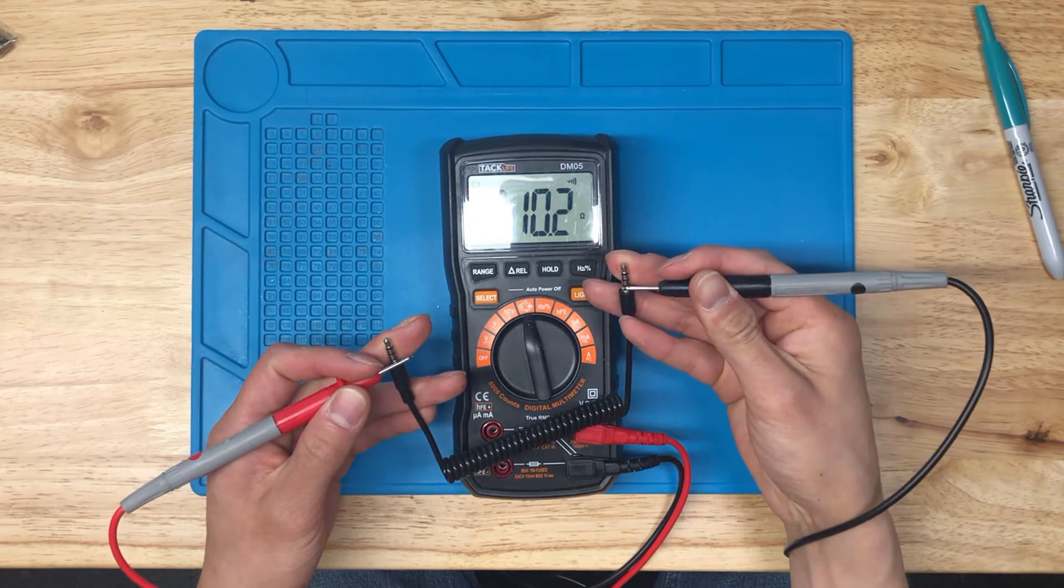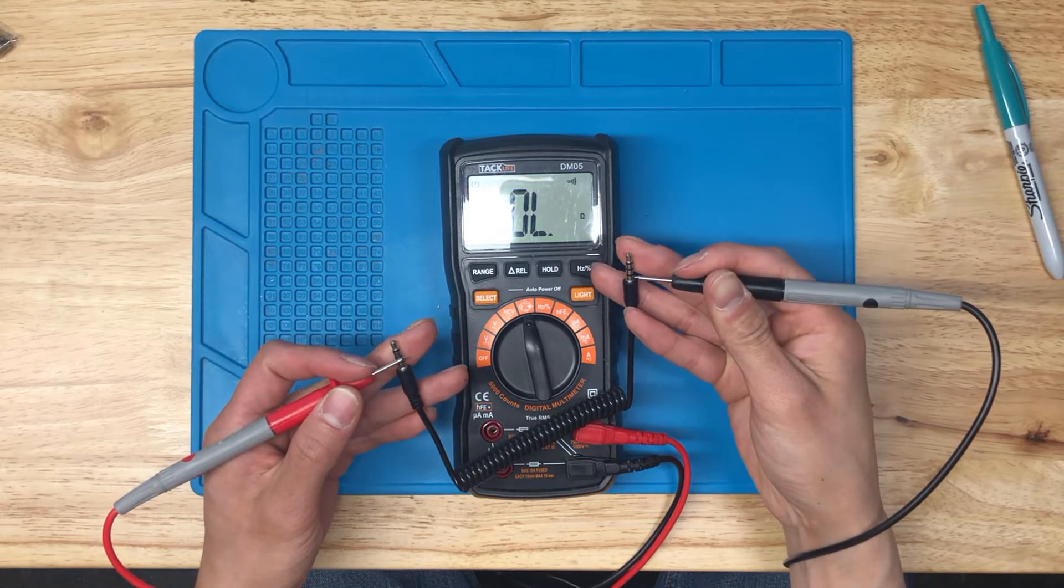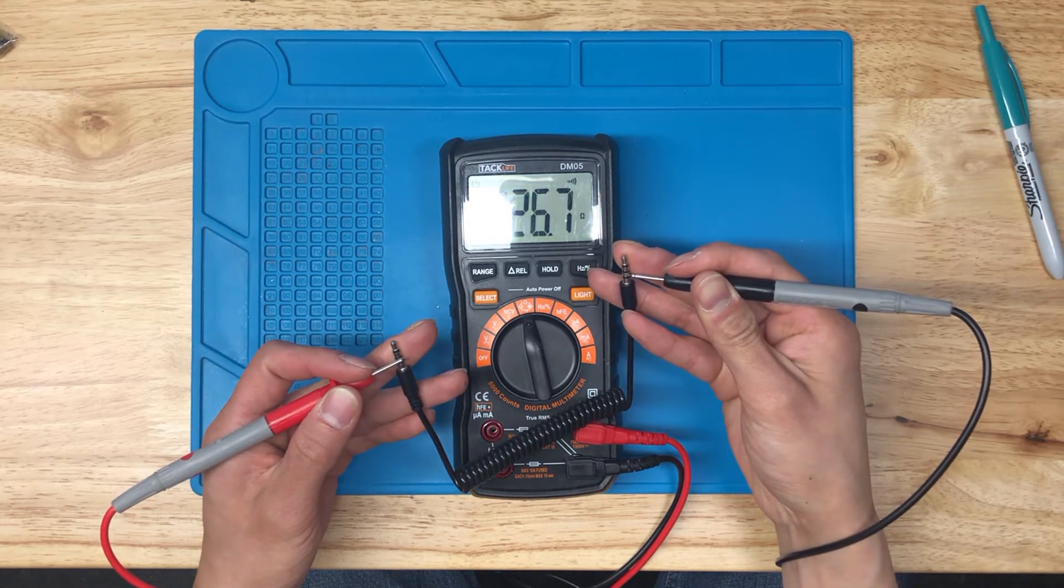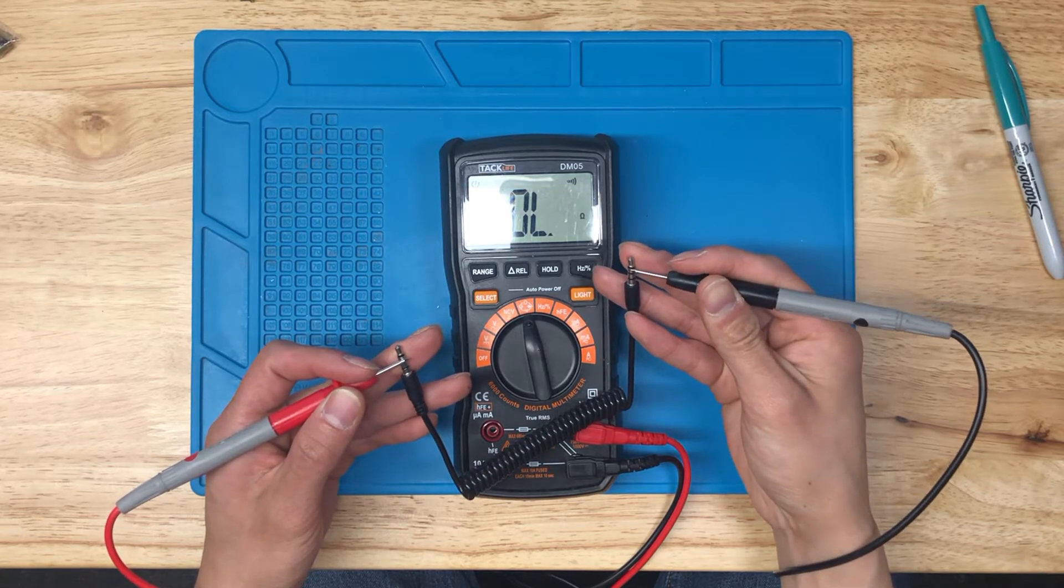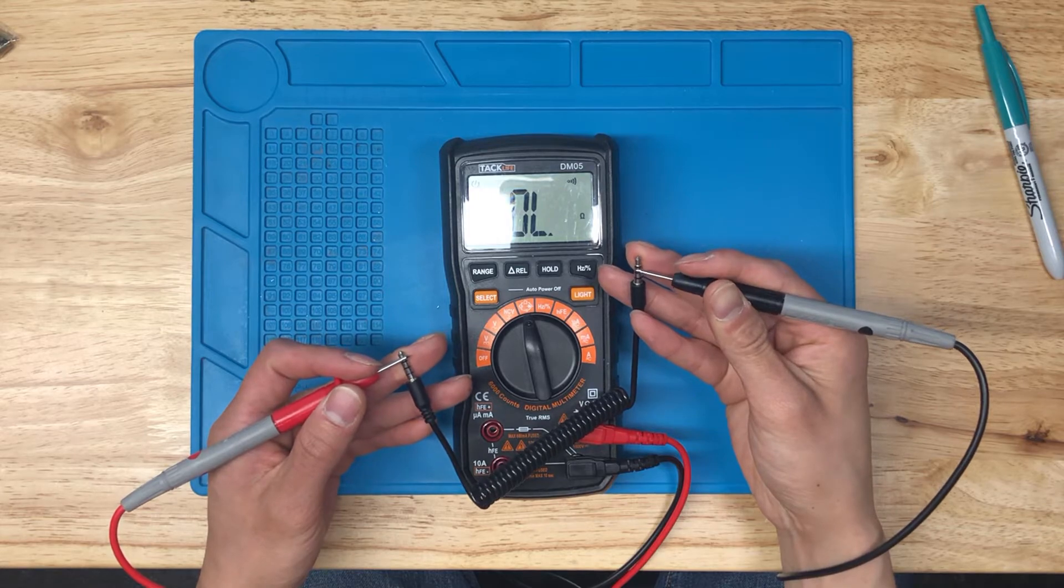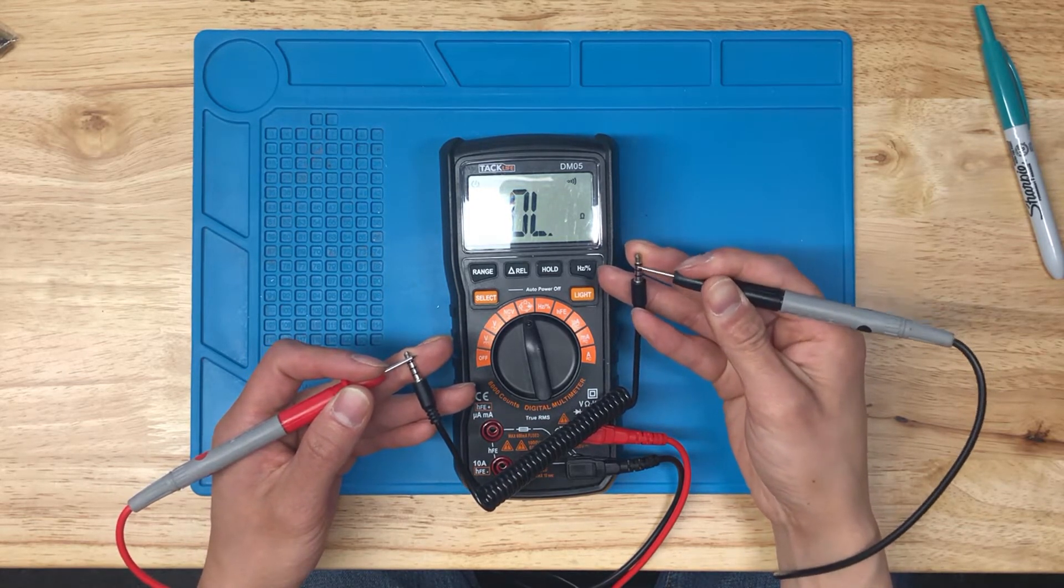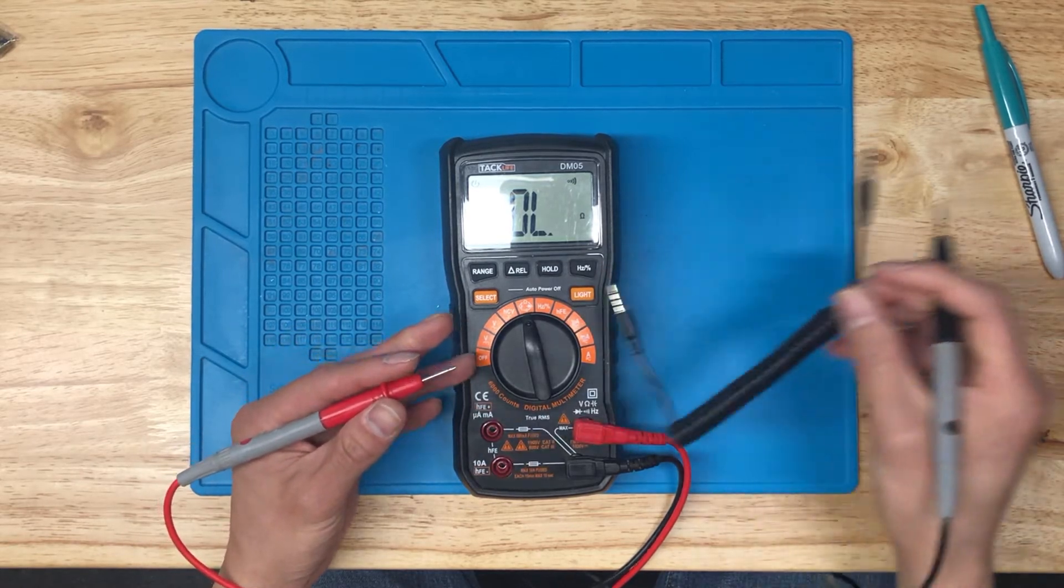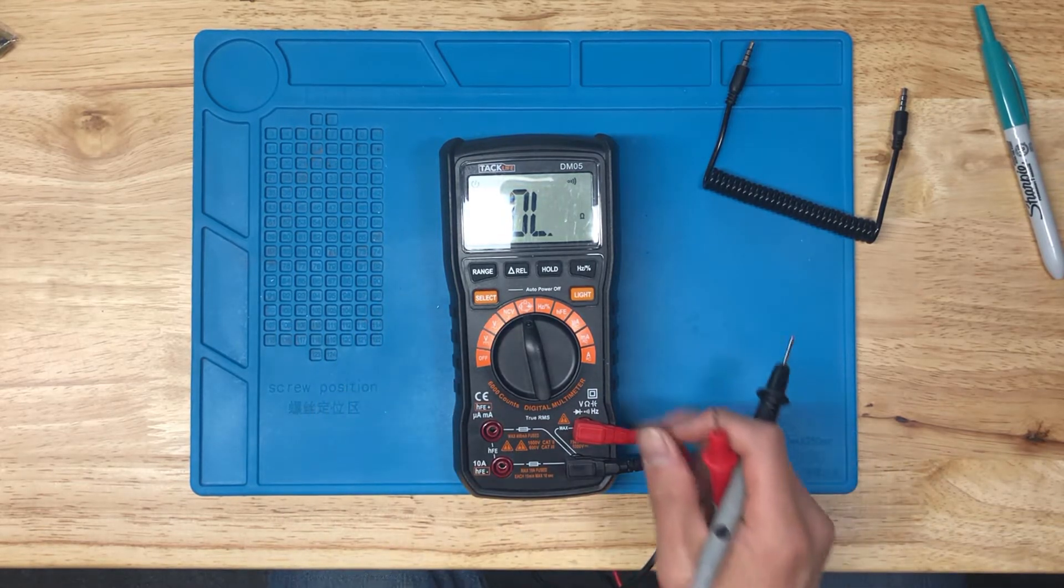And I'll do the same exact procedure I was doing before. Sleeve to sleeve, and test the rings and the tip. And move on to the ring, test the rings. And the other two contacts. And then now the tip. This tip does not contact with any of these other three on here. So there we go. That's how you do a continuity test with a multimeter, at least for the cable.